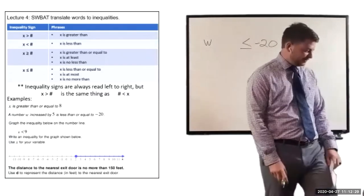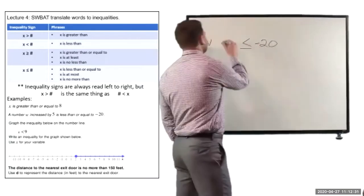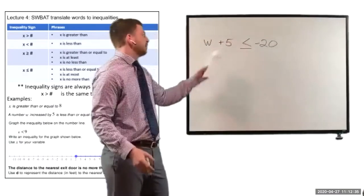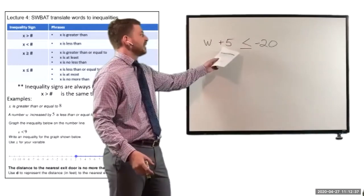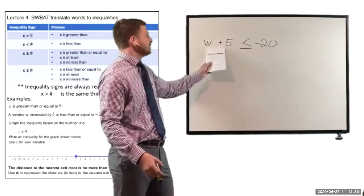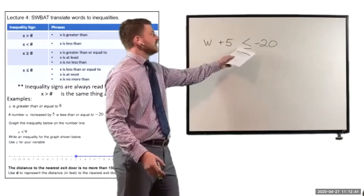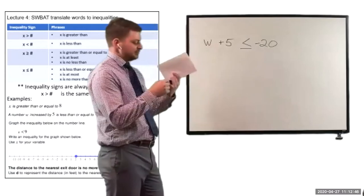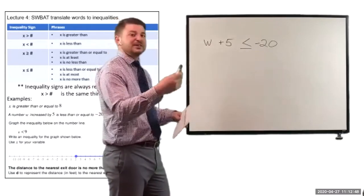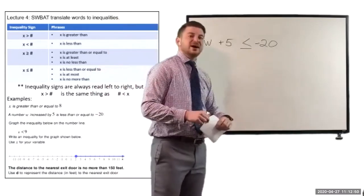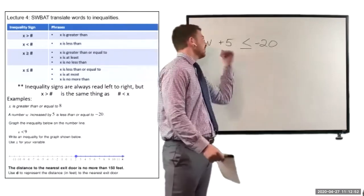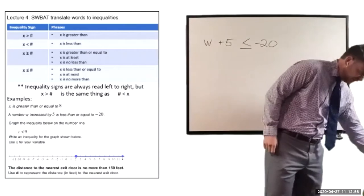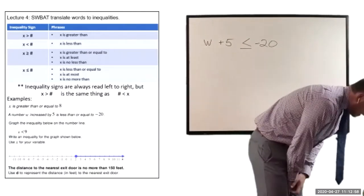Good — plus 5. So, don't let that trip you up. It's just a number with 5 more added onto it, and we're saying that expression is less than or equal to negative 20. So, w plus 5 is less than or equal to negative 20. Just remember: if you're increasing a number, you're adding. If it said 'a number less 5,' then that would be subtracting.